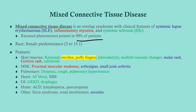Musculoskeletally, you can get proximal muscular weakness as seen in polymyositis/dermatomyositis, plus arthralgias and small joint arthritis. Pulmonary manifestations include interstitial lung disease like systemic sclerosis. Cardiac involvement can include AV block, also seen in systemic sclerosis. GI manifestations include reflux and dysphagia like systemic sclerosis - remember that falls under CREST syndrome, specifically the 'E' for esophageal disturbances.